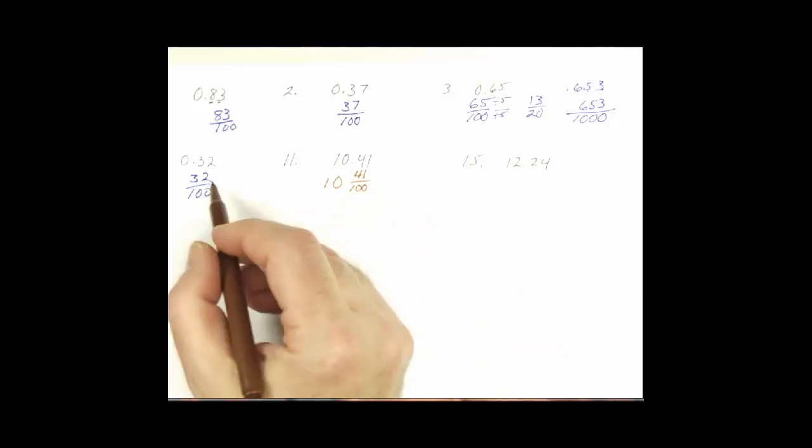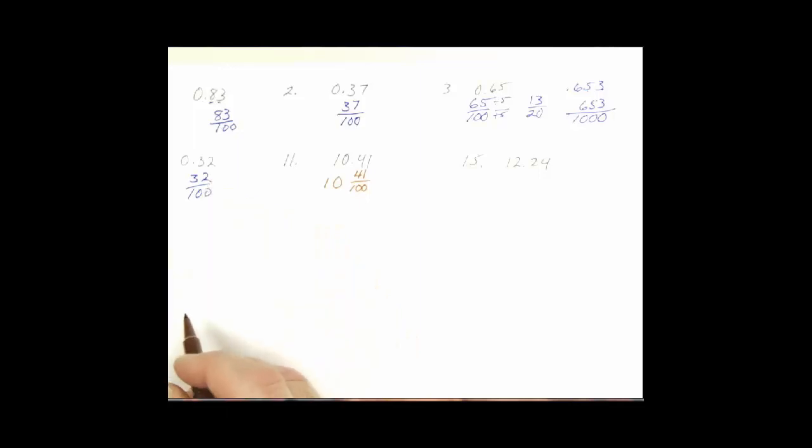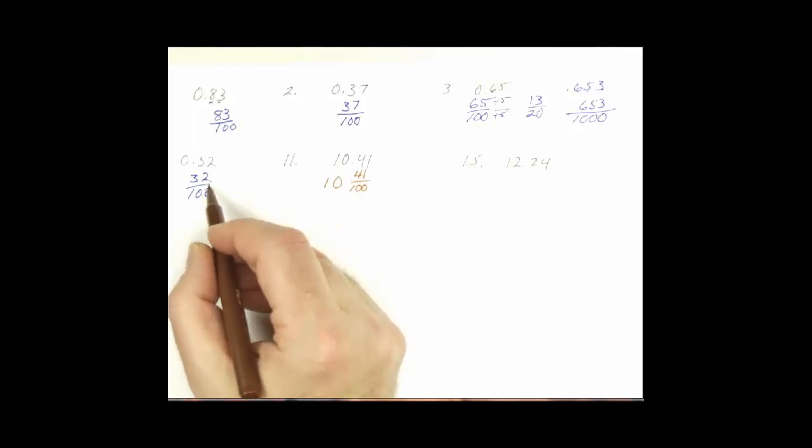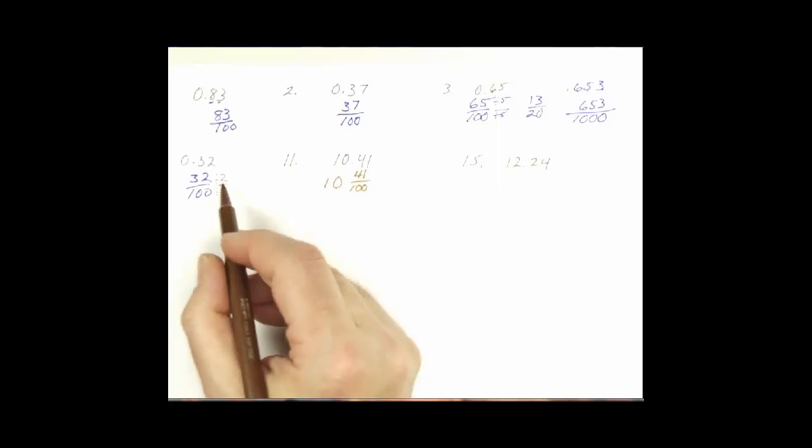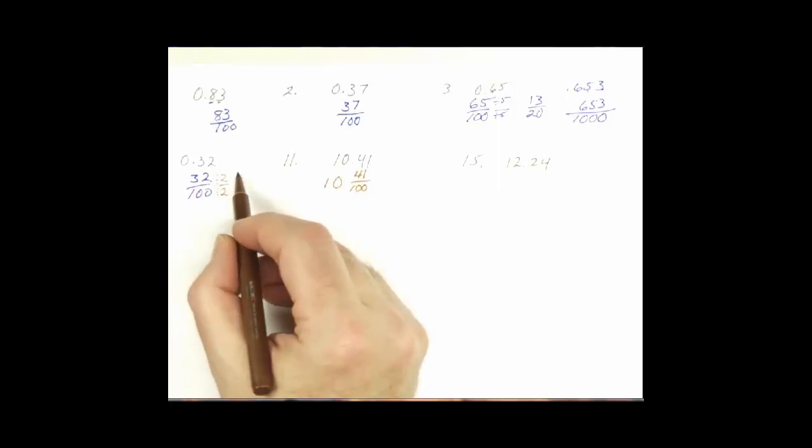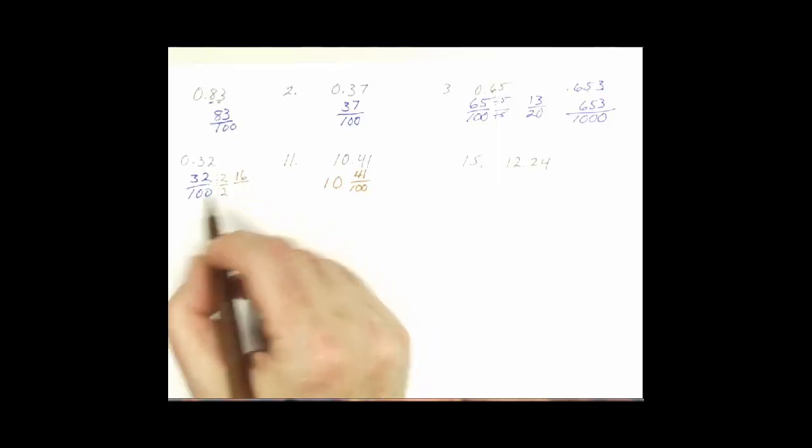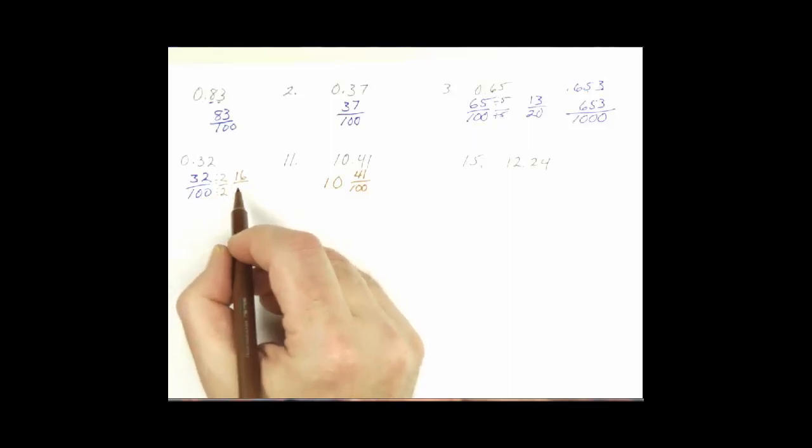Back on problem 8, we need to reduce, don't we? Both even, so I know that two goes in. So let's do it that way in a couple of steps. I did not pick the biggest one on purpose just to practice. So how many twos in 32? That's going to be 16. Twos in 100? 50.